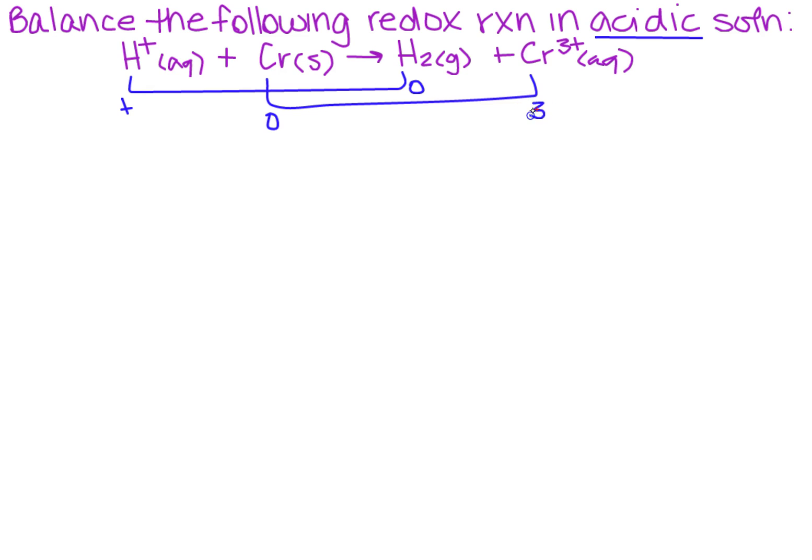Here it's zero, and it's three plus. So now remember, reduction is when you reduce the number of electrons. So the H is the reduction, and the chromium is the oxidation.